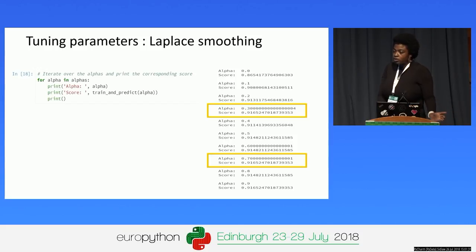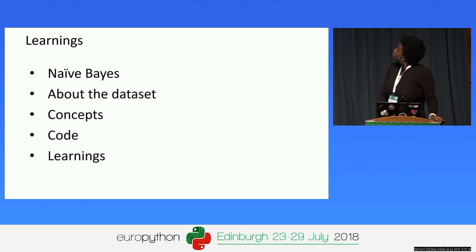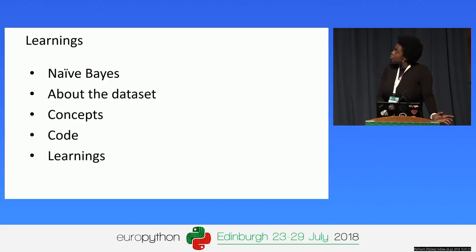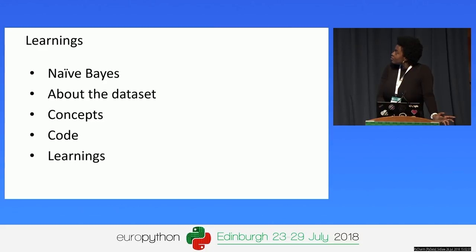Running it through a loop with those alpha ranges, we can see from the results that alpha 0.3 and alpha 0.7 are the highest. So, to summarize: I talked about the Naive Bayes algorithm and why it's such a good algorithm for working with texts, and also how to implement it in Python. Hopefully we were all able to understand and can better appreciate this Naive Bayes classifier.